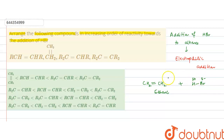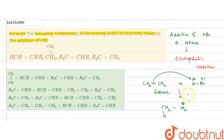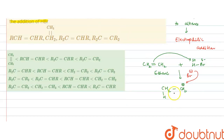Bromine being electronegative will have a partial negative charge over it, and hydrogen will have a partial positive charge. The pi electrons present in ethene act as a nucleophile and attack the H⁺, forming a carbocation. Then Br⁻ attacks the electrophilic carbocation center, and the product CH₃CH₂Br is formed.